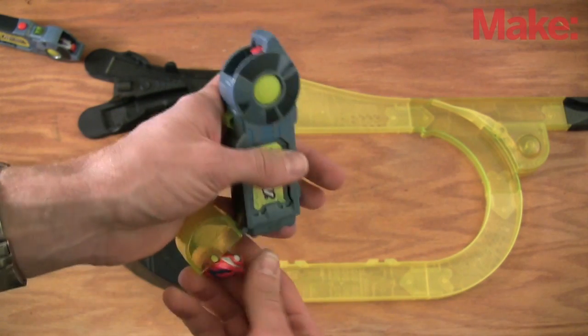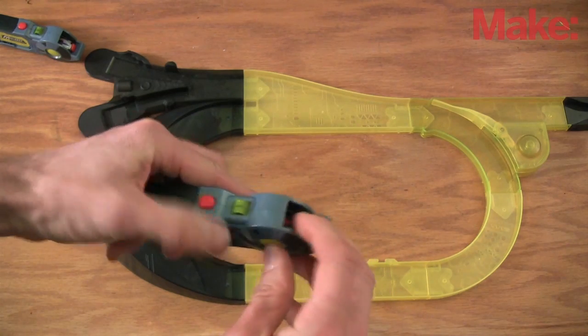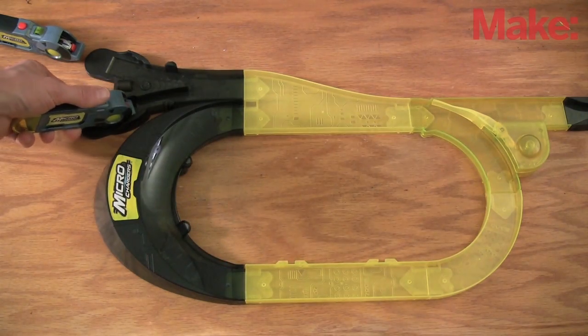The Microchargers line of cars uses pocket-sized launchers to store, charge, and then launch tiny race cars.